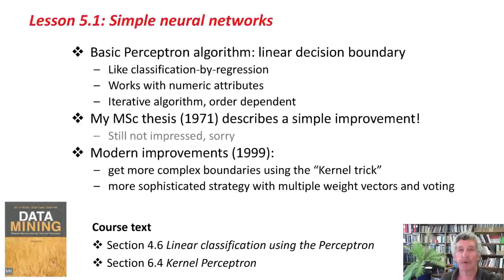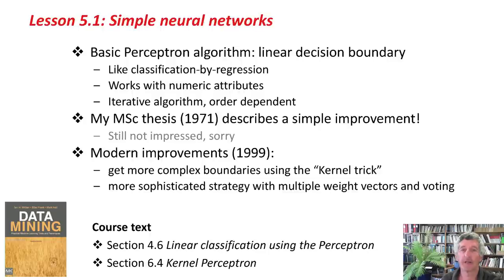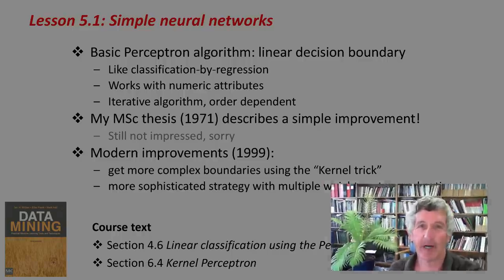Here's the summary. The basic perceptron algorithm implements a linear decision boundary and is very reminiscent of classification by regression. It works with numeric attributes. It's an iterative algorithm and depends on the order in which it encounters the training instances. Many years ago, in 1971, I described a simple improvement to the perceptron in my master's thesis, but I'm still not very impressed with the perceptron. Recently there have been some improvements: the use of the kernel trick to get more complex boundaries, and this voted perceptron strategy with multiple weight vectors voting. There are chapters in the textbook about this, and an activity to help you learn more. We'll see you in the next lesson — bye for now.